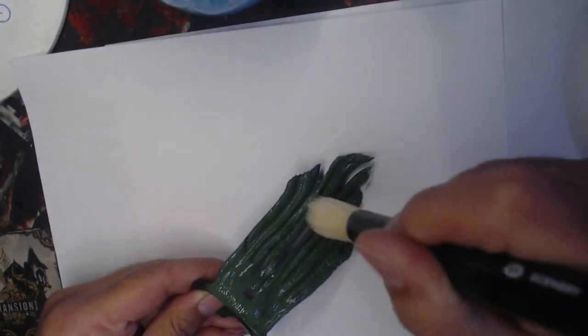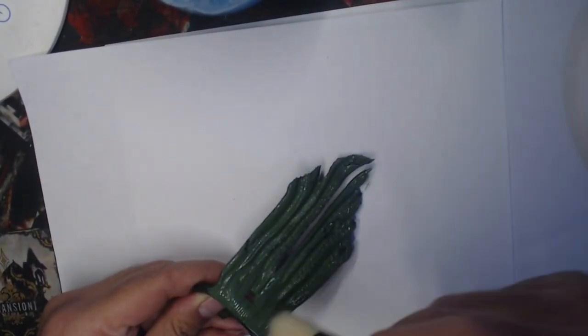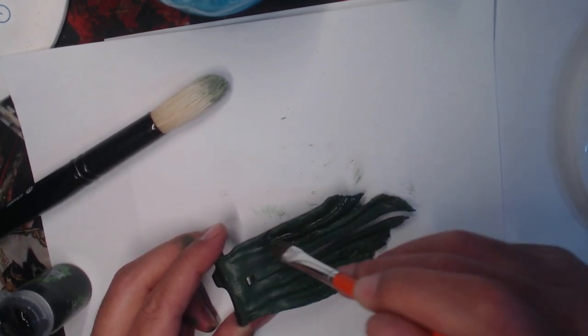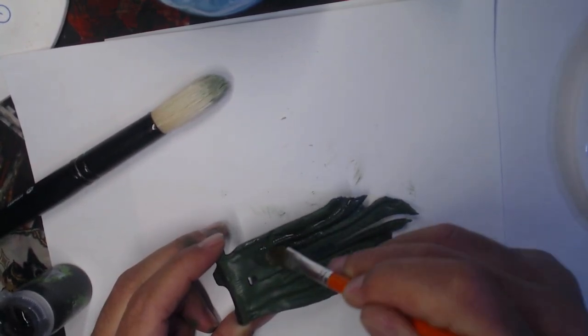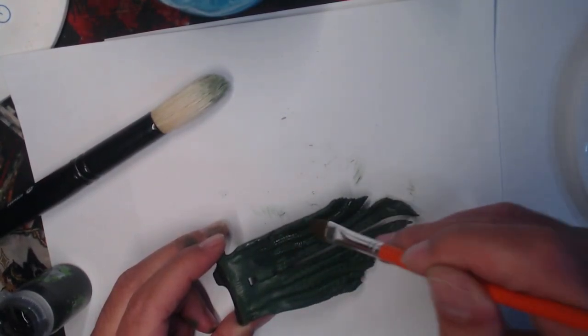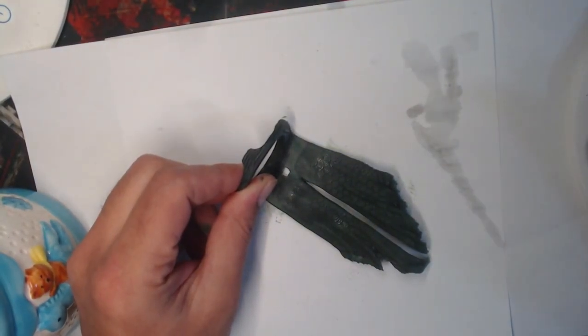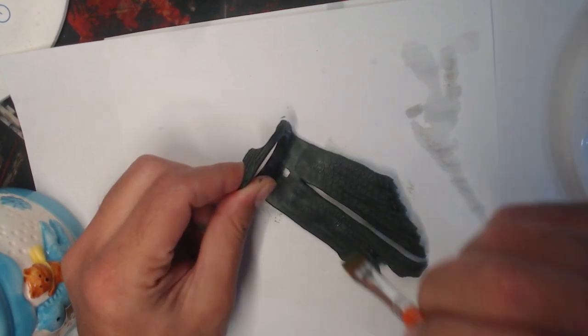So first up, we're going to do a heavy overbrush with Vallejo Gunship Green. This was followed up by a wash with Citadel Nullin Oil. I went back over this with a quick dry brush of the Gunship Green to normalize the color and soften up the shadow transitions.